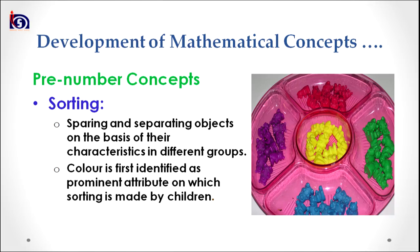The second sub-concept under pre-number concept is sorting. Sorting can be referred to as separating objects on the basis of their characteristics into different groups. For example, you can look at the tray on your screen in which different colors of small toys are placed together. In early years, color is first identified as the prominent attribute on which sorting is made by children. Afterward, they consider other attributes for sorting or separating different things into different groups.